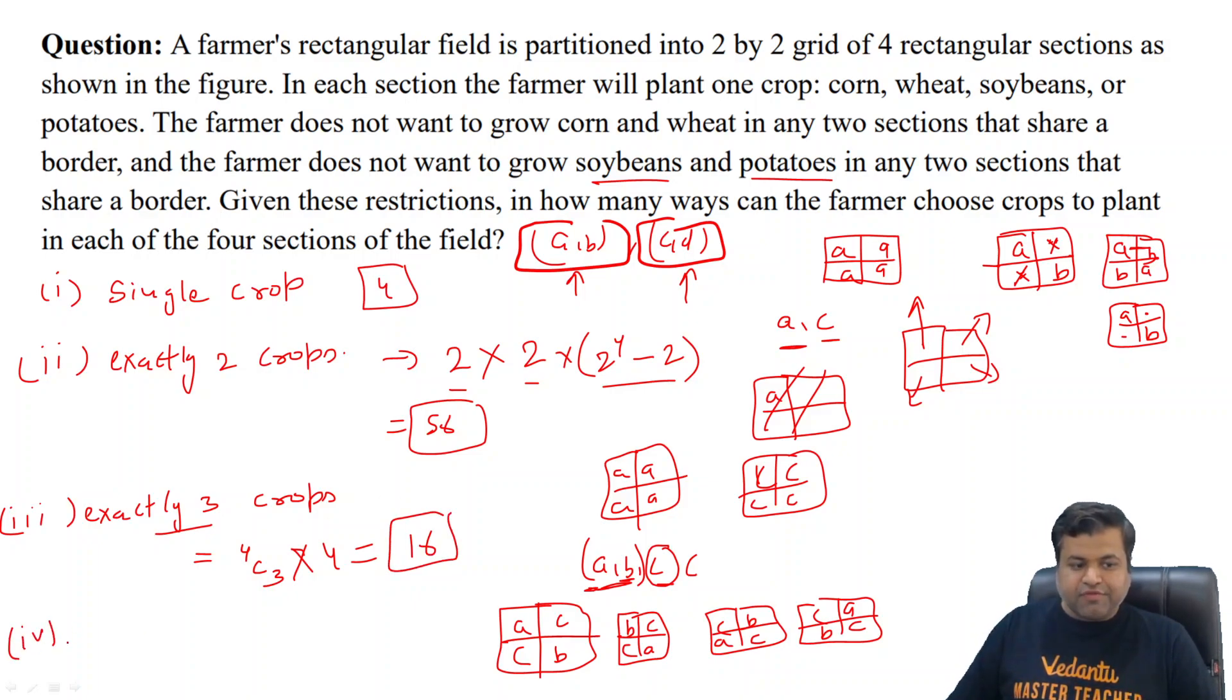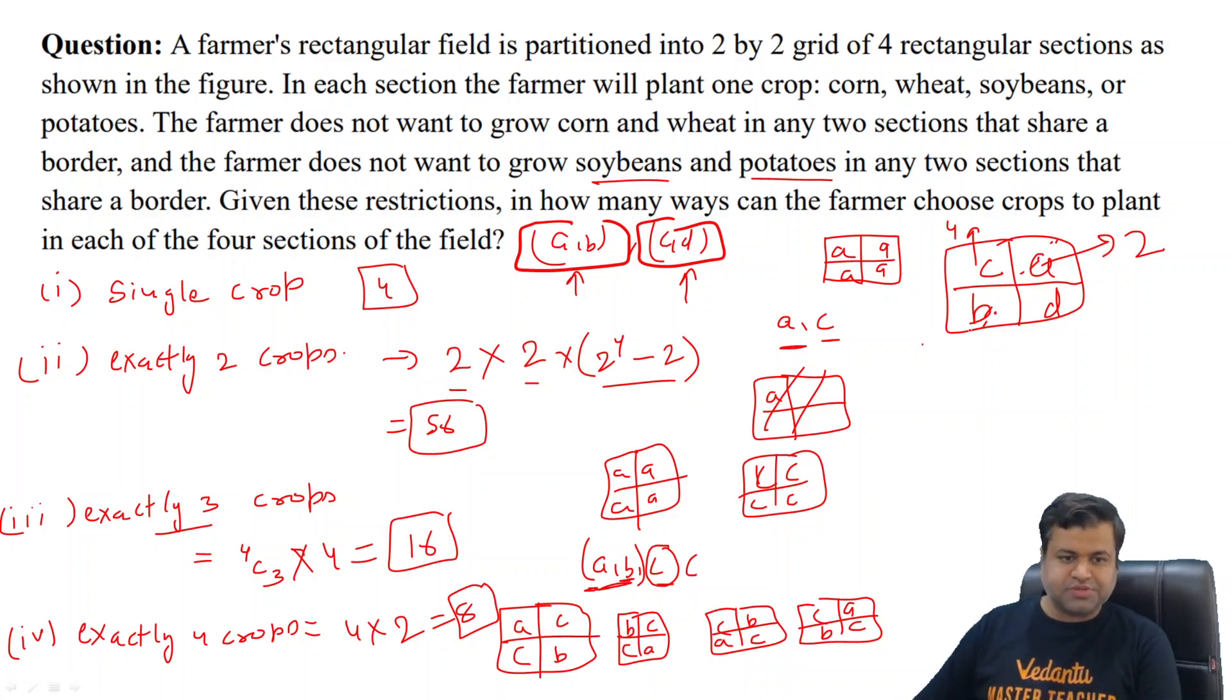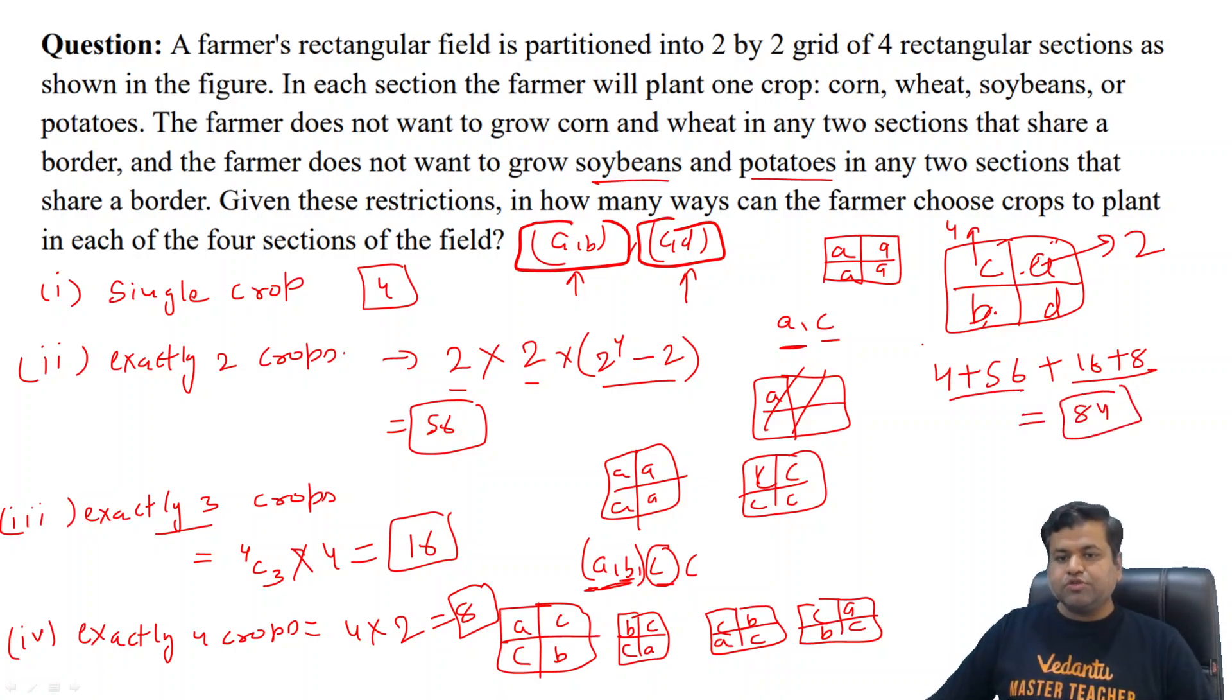Now let's try to figure out those ways when we plant exactly four crops. If we are using C and D before, here we are having four options for this. Let's say here we plant C, then this place will have only D because we cannot place C here. Now this place will have two options, either we can plant A or B. This place is fixed, then this will be automatically fixed. So basically 8 will be the number of ways for filling exactly four crops. Finally, total number of ways will be 4 plus 56 plus 16 plus 8. This is 24, 60 plus 24 is 84. In the previous solution also our answer was 84. Obviously the answer will remain same.